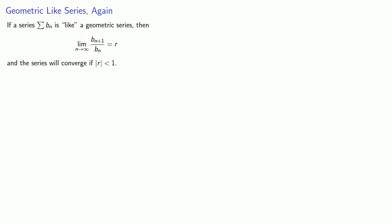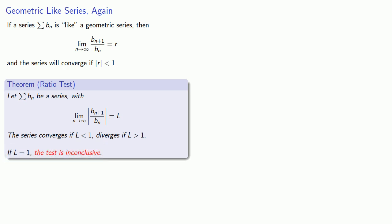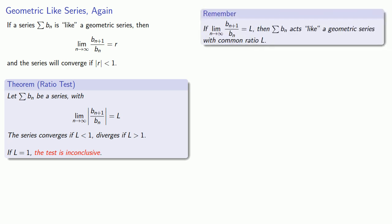This suggests what's known as the ratio test. Suppose I have a series where the limit as n goes to infinity of the ratio of successive terms is equal to some value l. Then the series converges if l is less than 1 and diverges if l is greater than 1. And again, if l is exactly equal to 1, the test is inconclusive. A useful way of thinking about the ratio test is that if the limit of the ratio of successive terms is l, then our series acts like a geometric series with common ratio l.